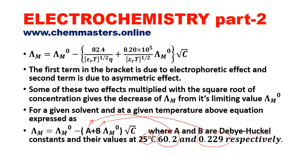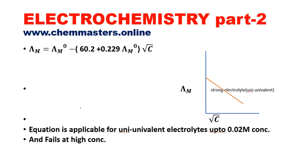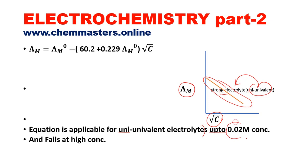Looking at the simplified equation at 25°C: if we plot molar conductance versus the square root of concentration, we should get a straight line for a uni-univalent strong electrolyte, with a slope. This equation is applicable for uni-univalent electrolytes up to 0.02 molar concentration only. If the concentration increases further beyond 0.02 molar, we see deviations from the straight line. Simply put, the Debye-Hückel-Onsager equation fails at high concentration.